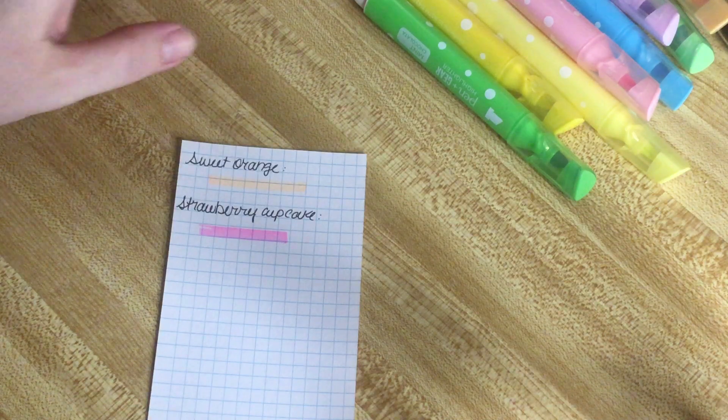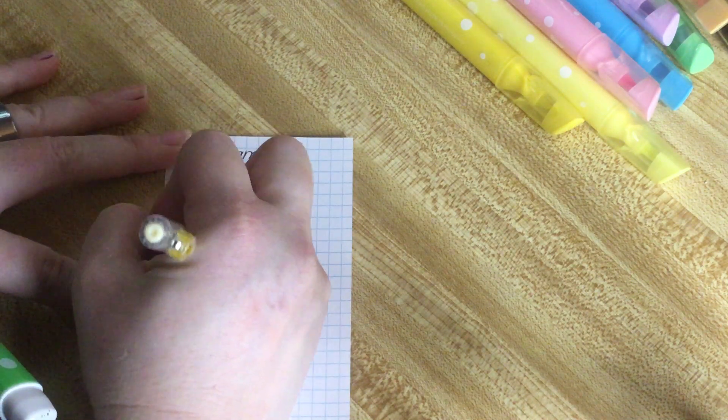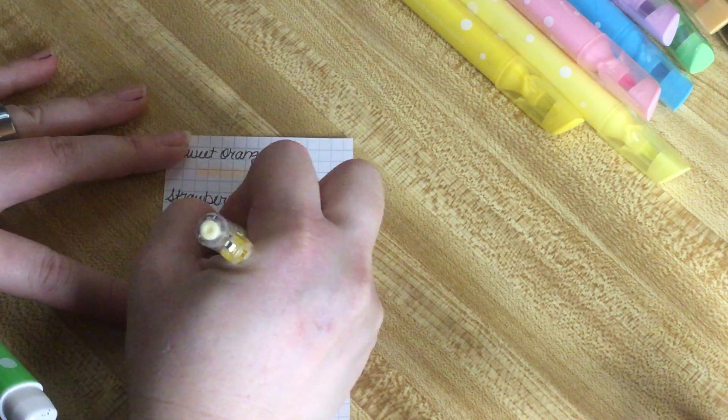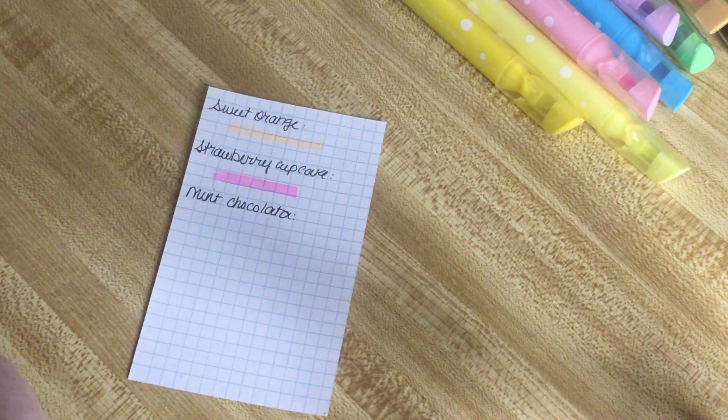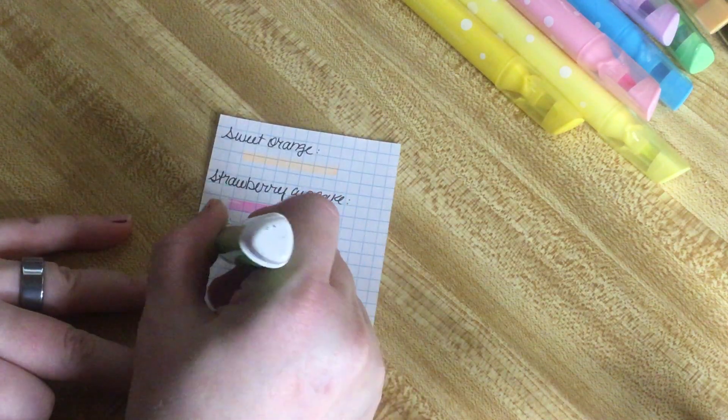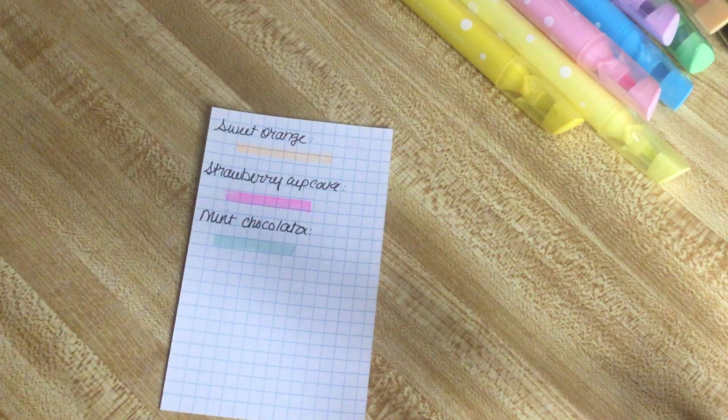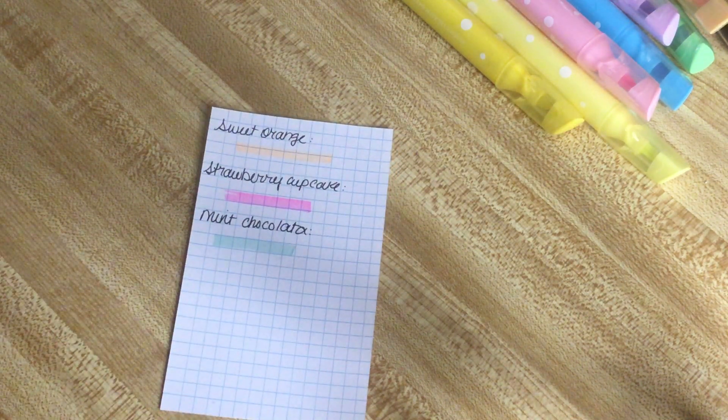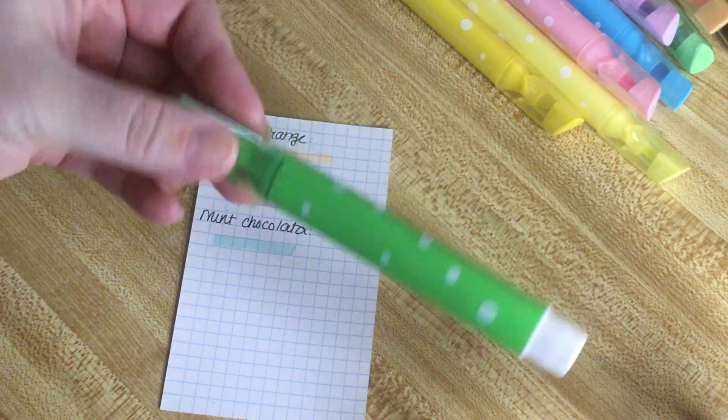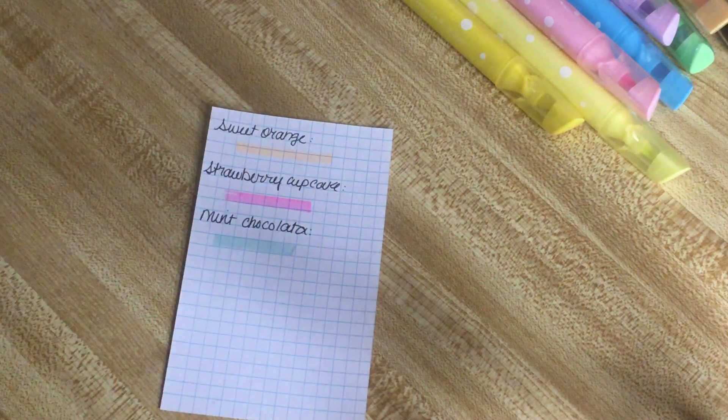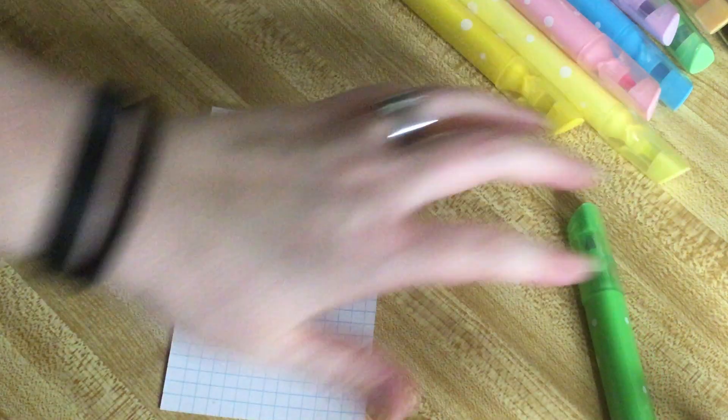The next one's called Mint Chocolate. If you can hear the puppies eating in the background, sorry, it's their breakfast time. This one looks like a standard bright green. It's super minty. Oh lord, it smells like a cleaner. It doesn't smell like mint or chocolate, it smells like floor cleaner to me. We're going to put this over here in the no-go pile.